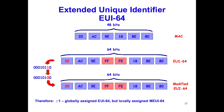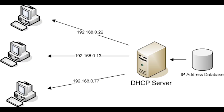EUI-64 is a method to automatically configure IPv6 host addresses. An IPv6 device will use the MAC address of its interface to generate a unique 64-bit interface ID. Since a MAC address is 48-bit and the interface ID is 64-bit, we take the MAC address, split it into two pieces, insert FFFE in between, giving a 64-bit value, and lastly invert the seventh bit of the interface ID.